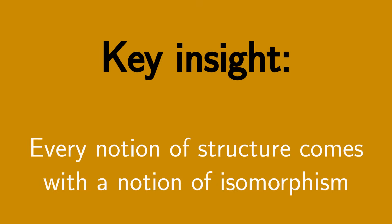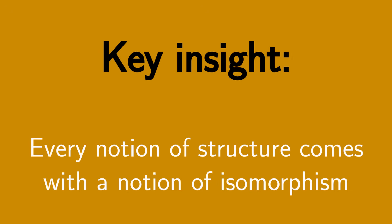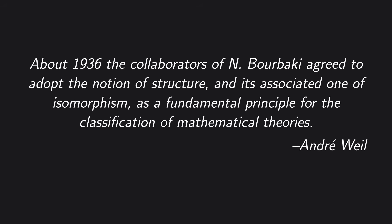The point here is that every notion of structure must come equipped with a notion of isomorphism. Defining when two structures are isomorphic is part of the essence of the notion of structure. If you change your notion of isomorphism, then you change what you're studying. You can have different universes with the same structures, but with different notions of isomorphism. This is the situation that Bourbaki recognized as they set out on their grand project. That mathematical theories are defined by a notion of structure and a notion of isomorphism between those structures.